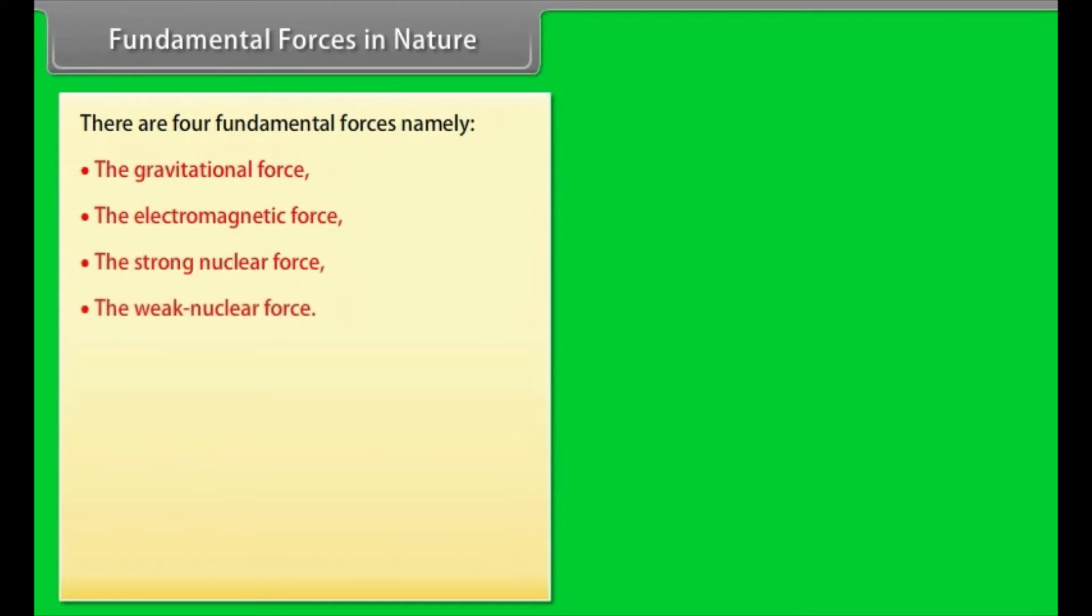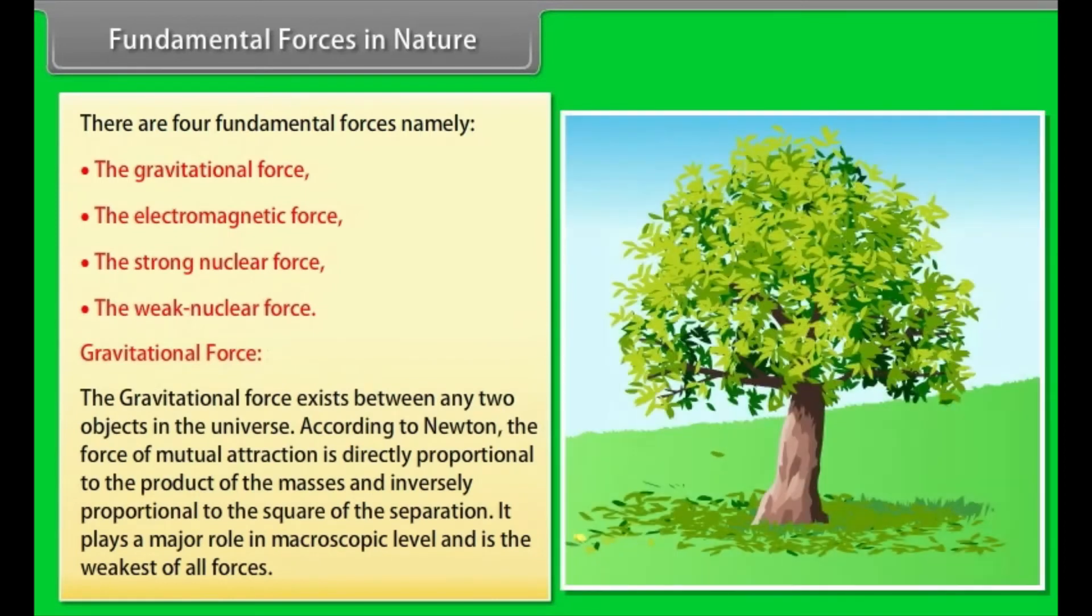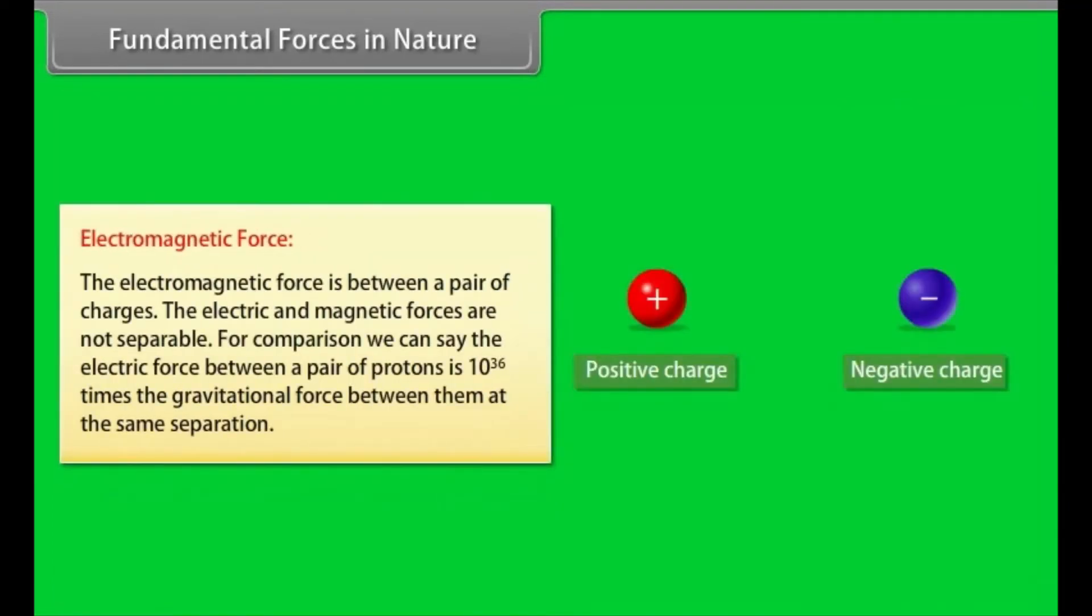Fundamental forces in nature. There are four fundamental forces, namely the gravitational force, the electromagnetic force, the strong nuclear force, and the weak nuclear force. The gravitational force exists between any two objects in the universe. According to Newton, the force of mutual attraction is directly proportional to the product of the masses and inversely proportional to the square of the separation. It plays a major role in macroscopic level and is the weakest of all forces.